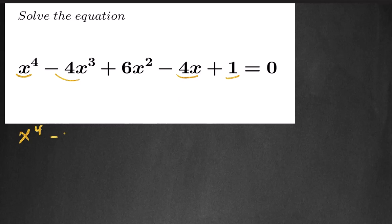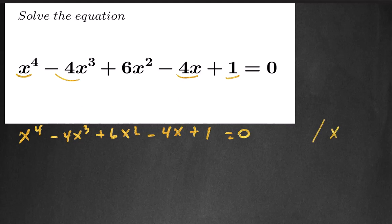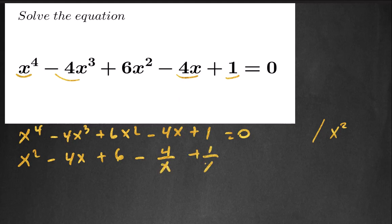We are going to first divide everything by x squared. If I rewrite the equation and divide everything by x squared, I will get x squared minus 4x plus 6 minus 4 over x plus 1 over x squared is equal to 0. So I'm going to group similar terms here.